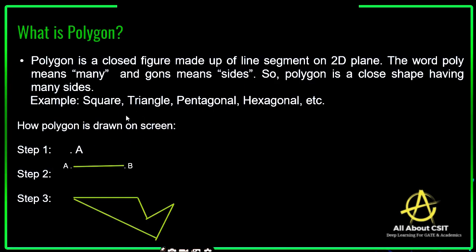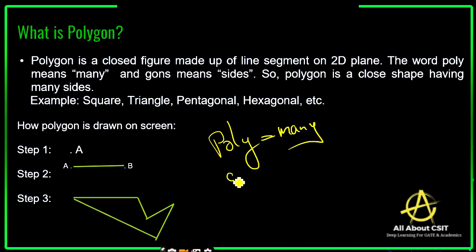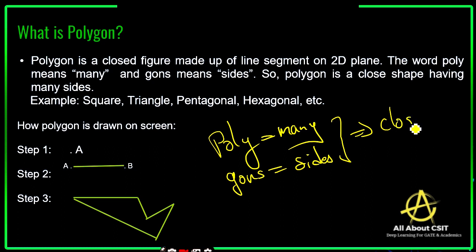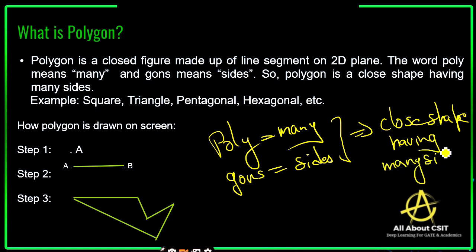What do you mean by polygon? A polygon is a closed figure made up of line segments on a 2D plane. The word 'poly' means many and 'gons' means sides. So a polygon is a closed shape having many sides. Examples of polygons are square, triangle, pentagon, hexagon, etc.